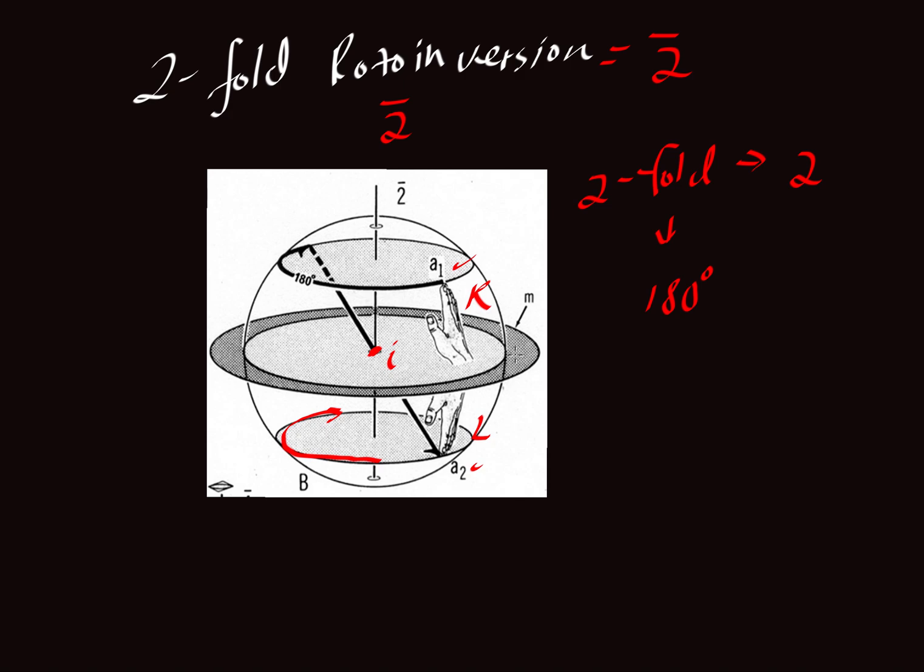And so if you want to impress your friends, you can call that an enantiomorphic pair, as we talked about when we referred to mirror plane symmetry. So we're changing the handedness. That's what makes it a so-called enantiomorphic pair.